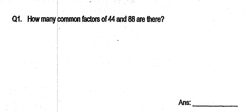Question 1: how many common factors of 44 and 88 are there? So first, let's list down all the factors of 44 and 88. For 44, we have 1, 2, 4, 11, 22, and 44.